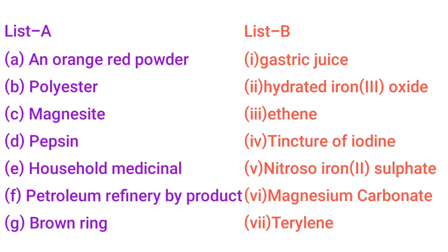Dacron/Scubase is polyester. Number 7 — Terylene. Terylene is nylon. C — Magnesite. Number 6 — Magnesium Carbonate.